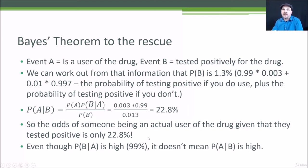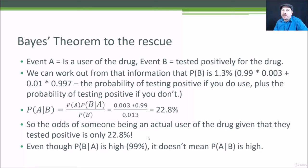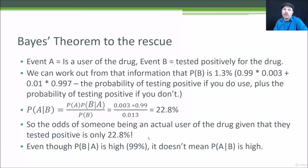Even though this drug test is accurate 99% of the time, it's still providing a false result in most of the cases where you're testing positive. People overlook this all the time. The lesson from Bayes' theorem is to always take these sorts of things with a grain of salt. Apply Bayes' theorem to these actual problems, and you'll often find that what sounds like a high accuracy rate can actually yield very misleading results if you're dealing with a low overall incidence of a given problem. We see the same thing in cancer screening and other medical screening. There are people getting very unnecessary surgery as a result of not understanding Bayes' theorem.